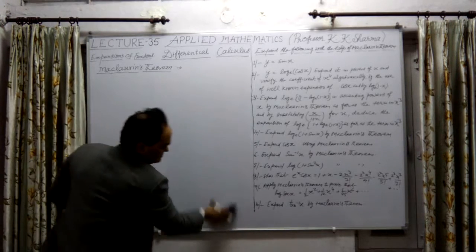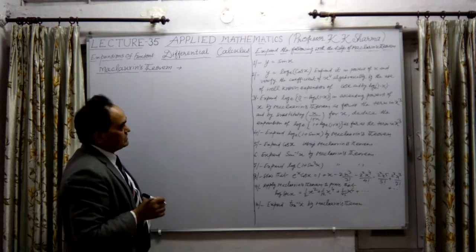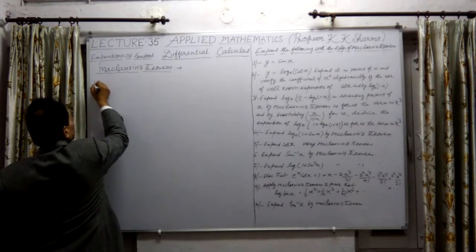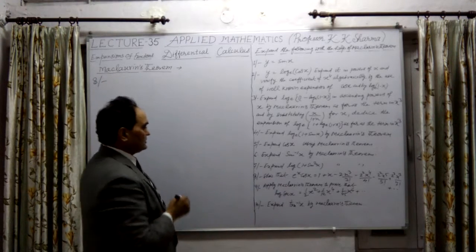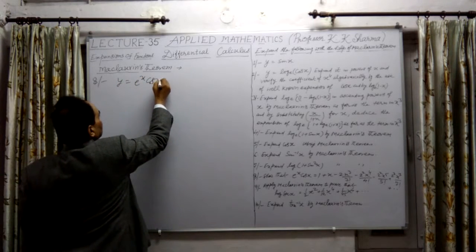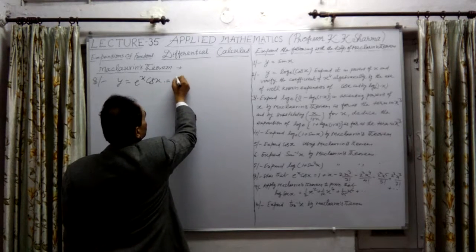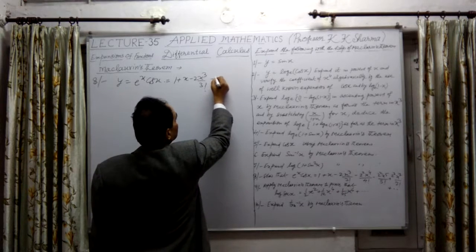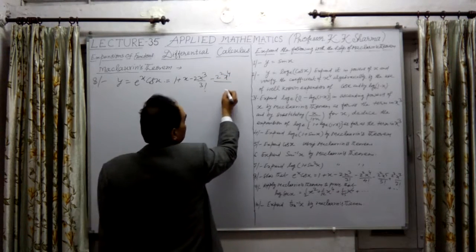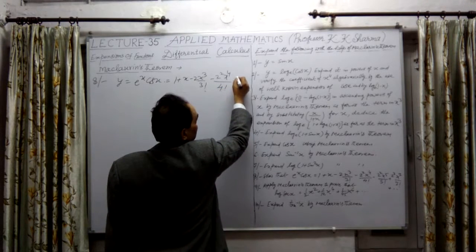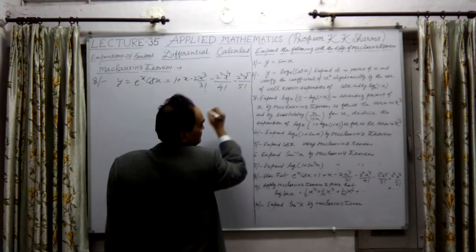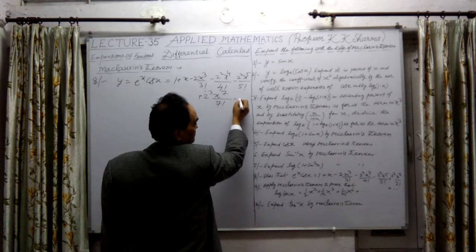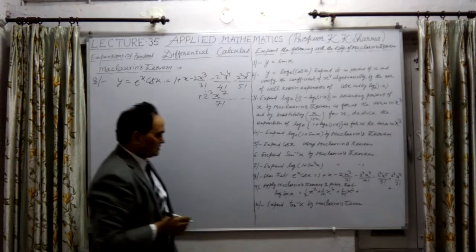Now question number 8. Let Y = eˣ·cos(x). We have to prove that this equals 1 + x − 2x³/3! − 2²x⁴/4! − 2²x⁵/5! + 2³x⁷/7! + and so on. Now let me solve it using successive differentiation.